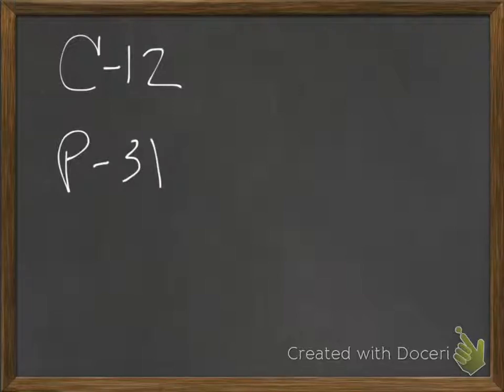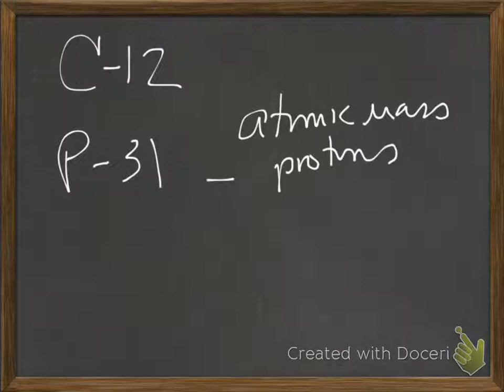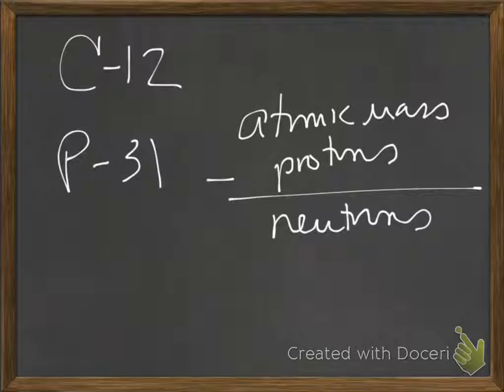For the next one, this is the piece that historically people struggle with a little bit. Remember that symbol notation gives you the mass. What's the mass of C-12? 12 AMUs. What's the mass of P-31? 31 AMUs. Also remember that the atomic mass minus protons gives you the number of neutrons. So that's the big piece there.